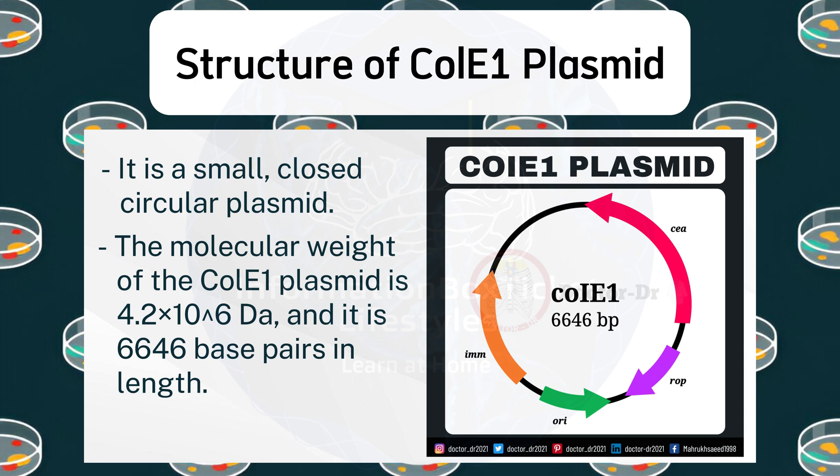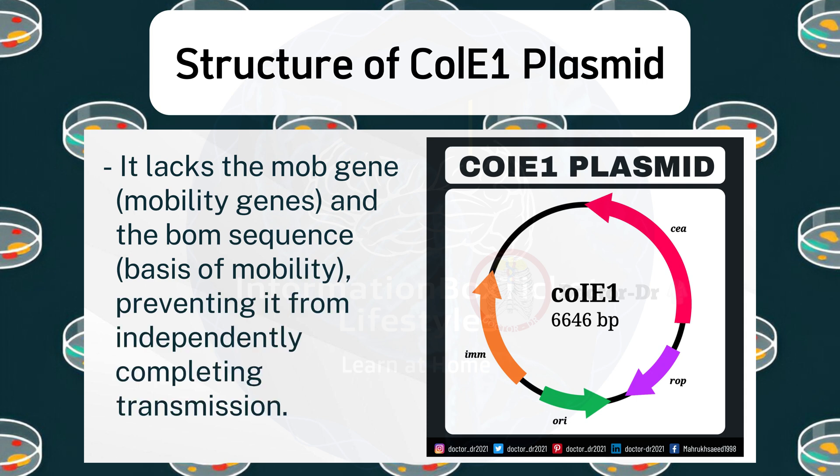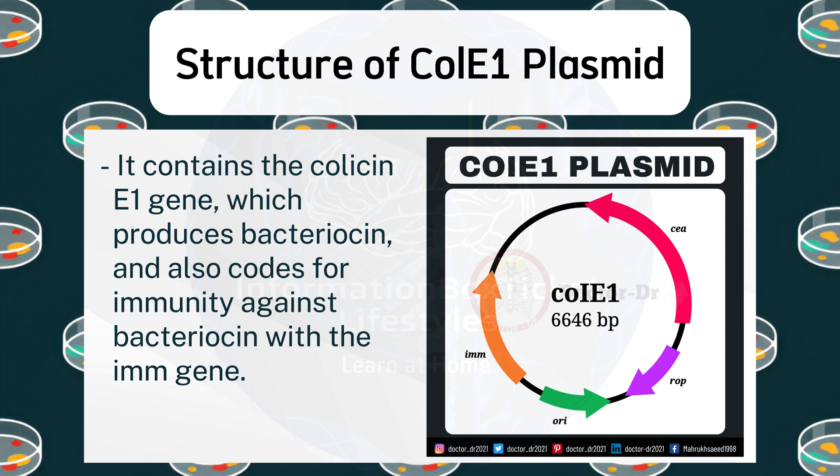It is 6,646 base pairs in length. It lacks the MOB gene (mobility genes) and the BOM sequence (basis of mobility), preventing it from independently completing transmission. It contains the colicin E1 gene, which produces bacteriocin, and also codes for immunity against bacteriocin with the IM gene.